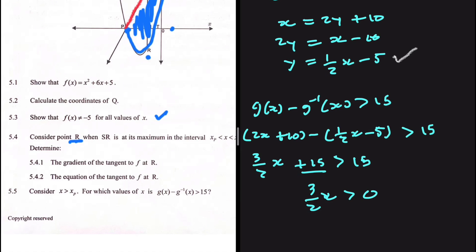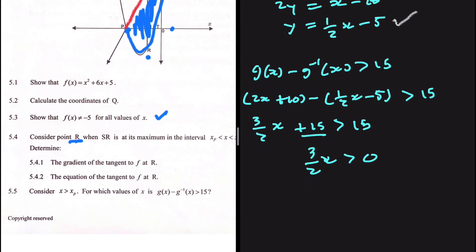Since 15 minus 15 equals 0, and dividing both sides by three-halves, we get x is greater than 0.